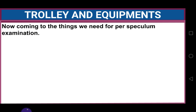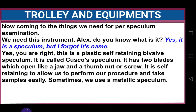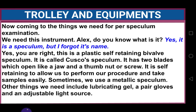For the examination preparation, explain what equipment we need. Show the Cusco speculum to Alex. 'Do you know what this is?' Alex recognizes it as a speculum. 'This is a plastic self-retaining speculum — it is called the Cusco speculum. It has two blades which open like a jaw, and it has a thumb nut or screw. It is self-retaining to allow us to perform the procedure and take samples easily. Sometimes we use a metallic speculum. We also need lubricating gel, a pair of gloves, and an adjustable light source.'